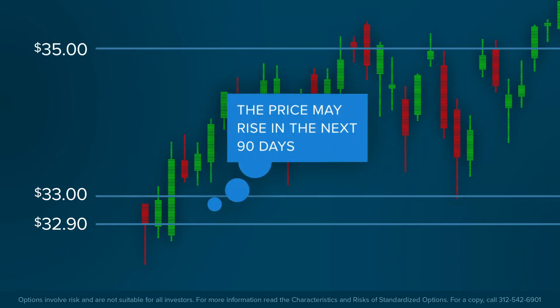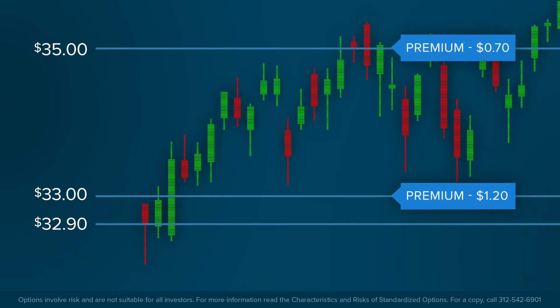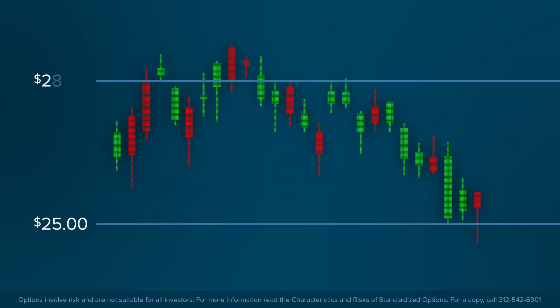The investor expects the share price to rise within the following 90 days. The question the investor faces is what price should be paid for the rights conveyed by the call option. The probability of the share price rising to the $33 strike is greater than the probability of the shares rising to $35. Therefore, the premium cost for the $33 strike option would be higher than the premium cost of the $35 strike option. The opposite is true for put options, since they convey selling rights.